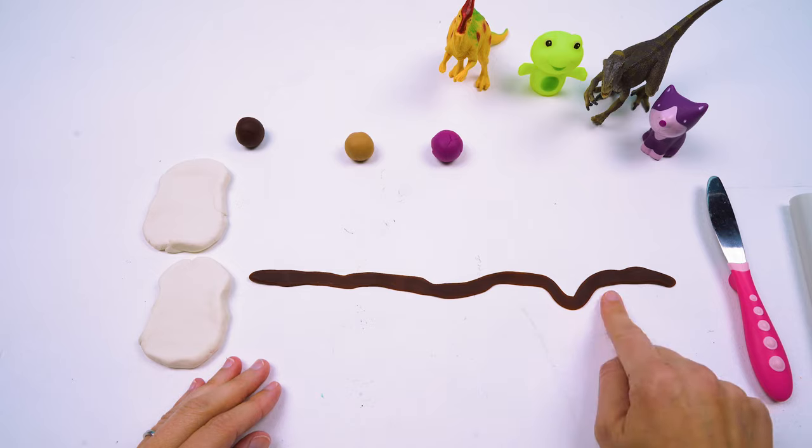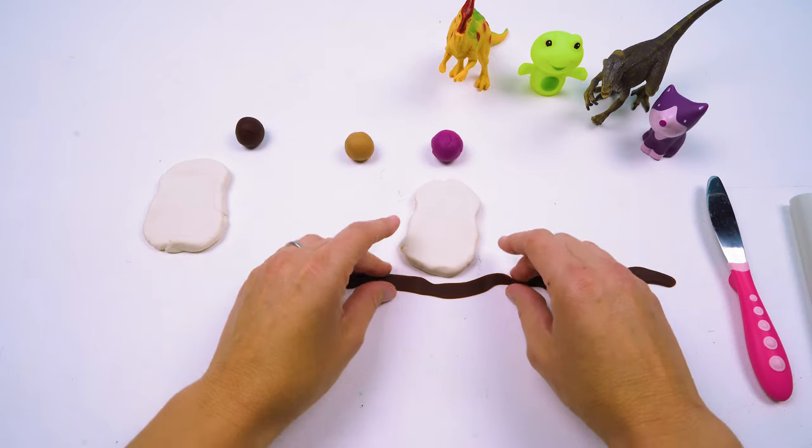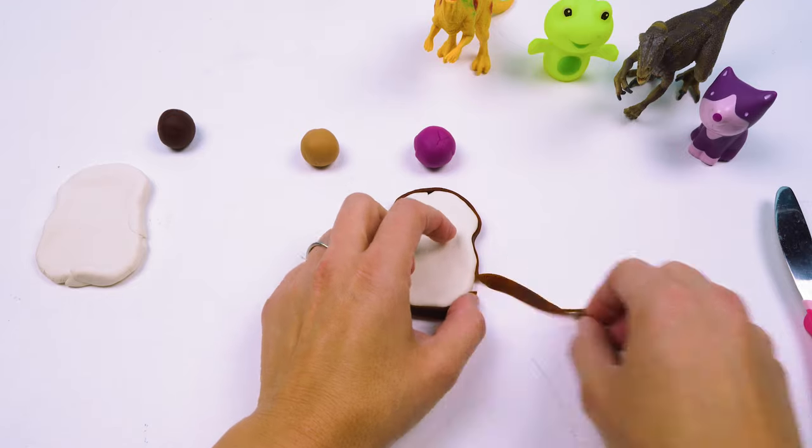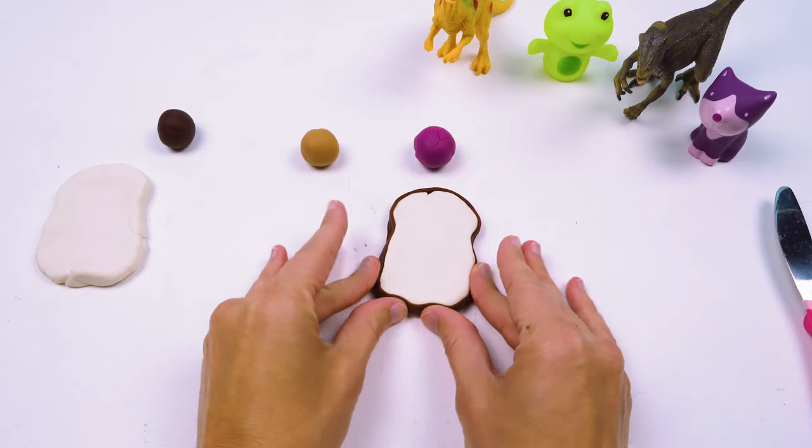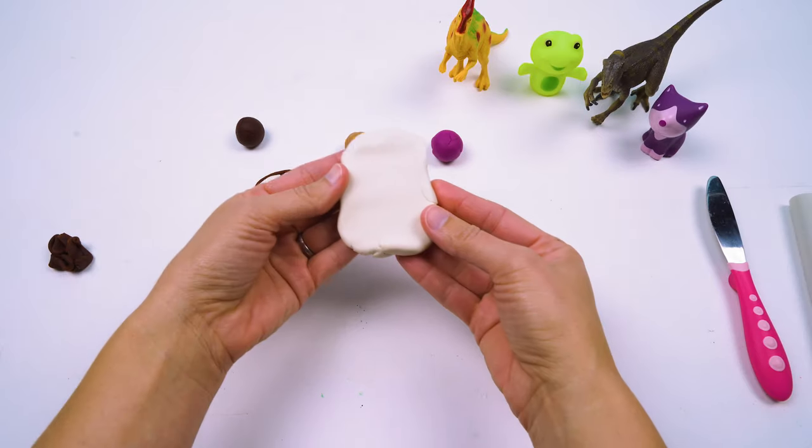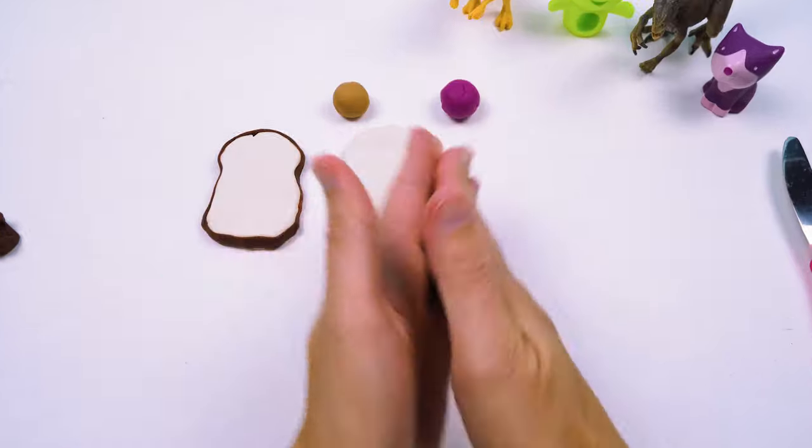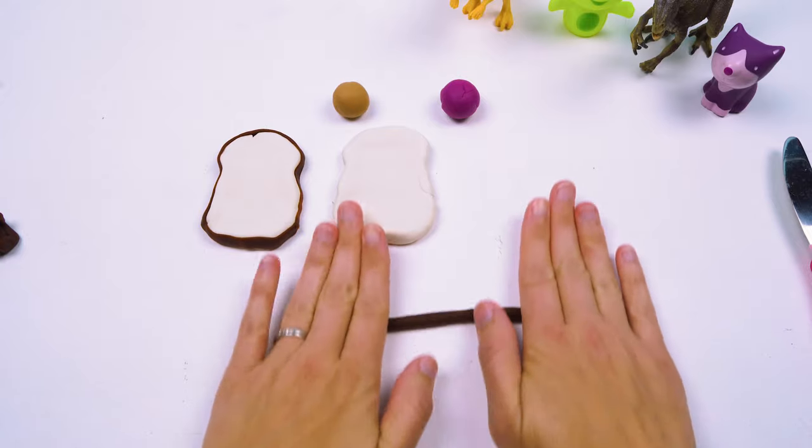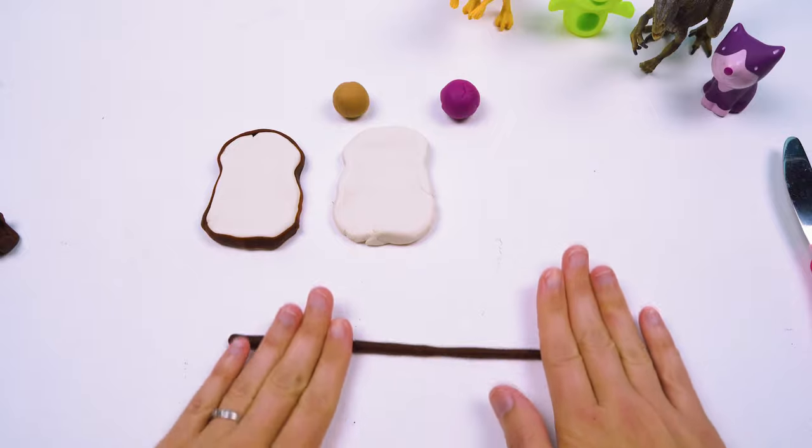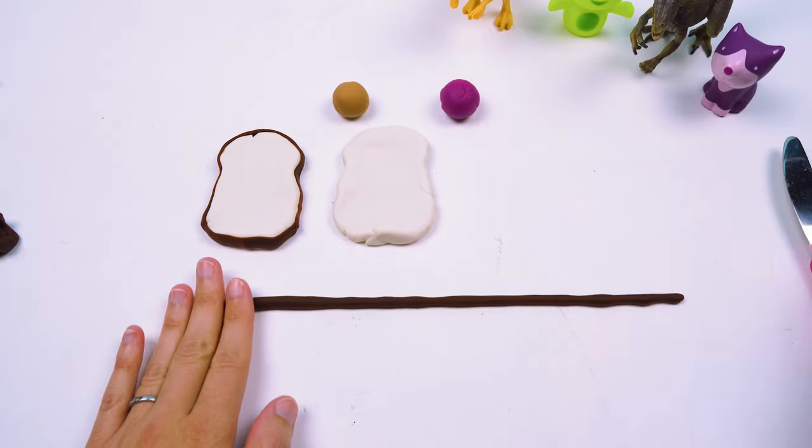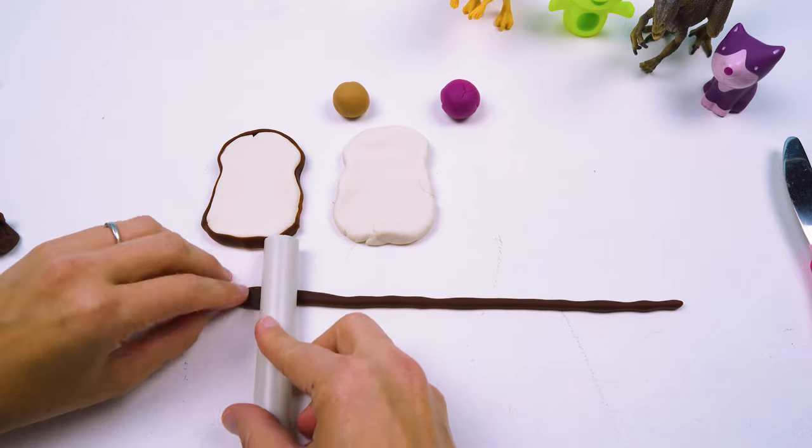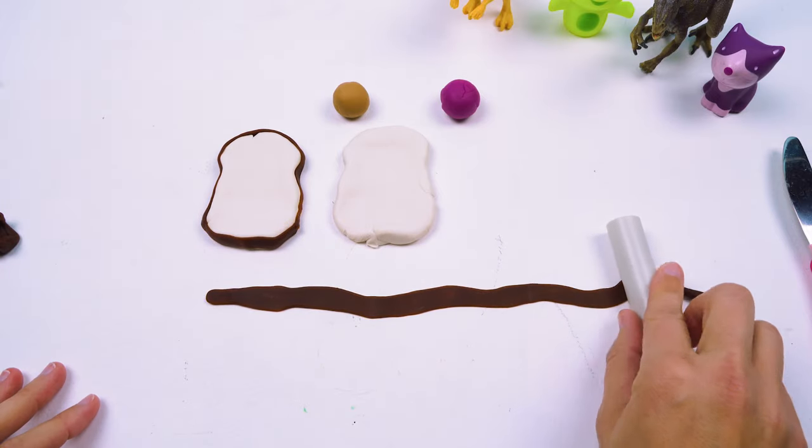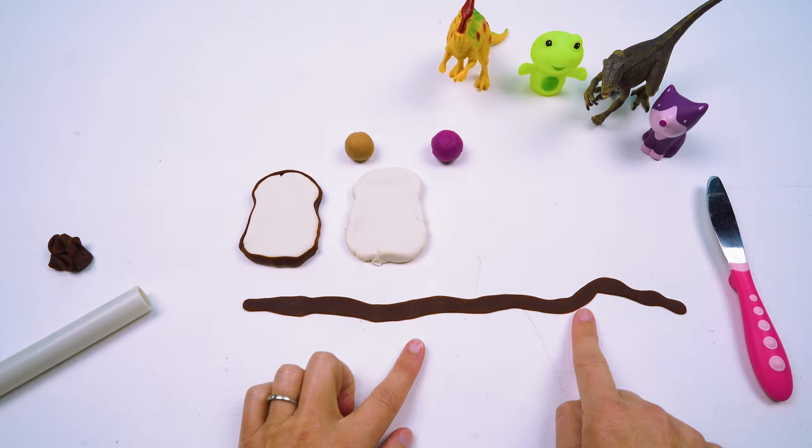So let's put some crust along the outside. Oh, that's a squiggly little crust, isn't it? Oh my goodness. All right, let's add it to our bread. And of course we have to do the second piece. This one is squiggly at the end too.